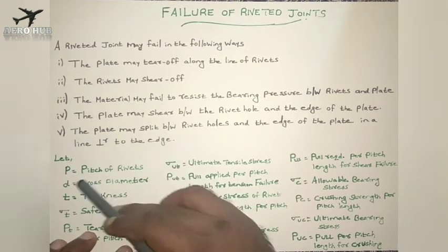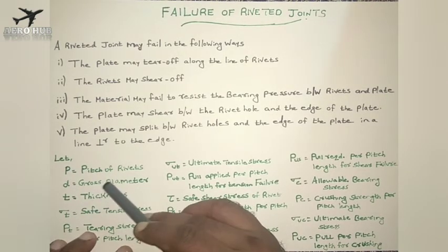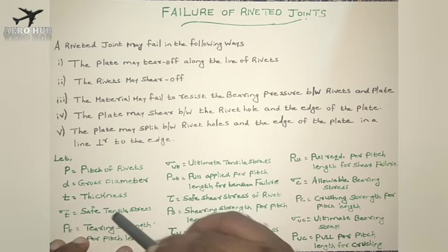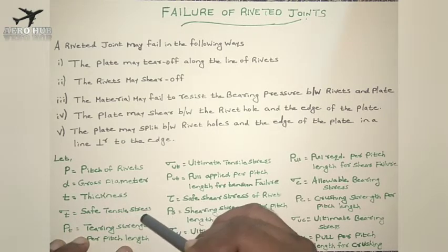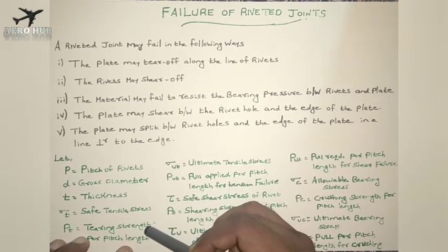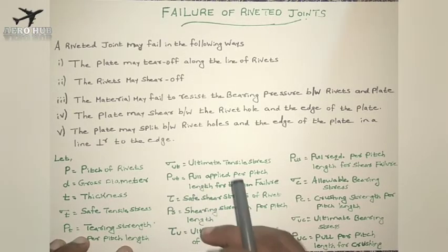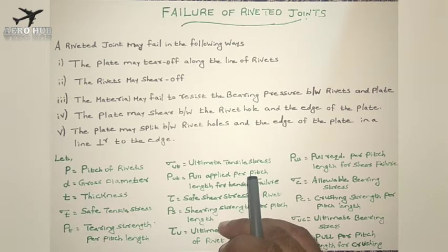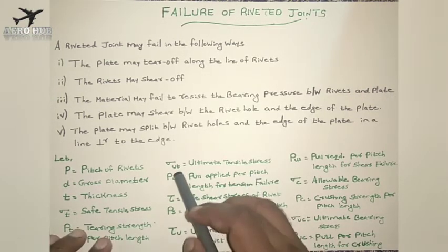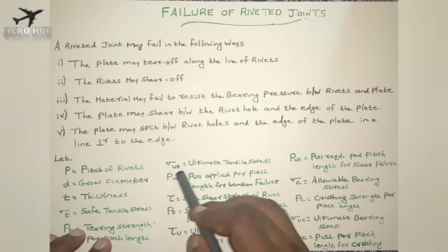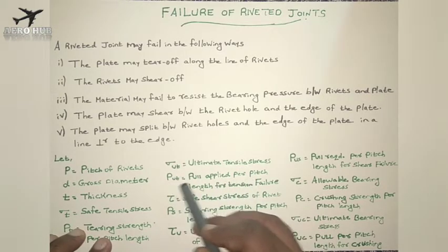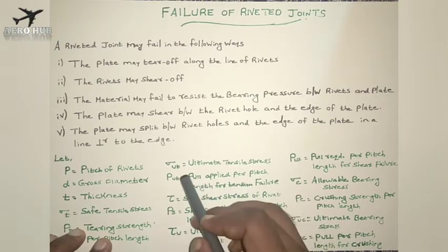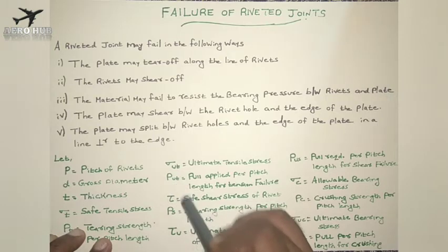Let p be the pitch of the rivet (small letter p), d is diameter, and t is the thickness of the plate. Sigma_t is the safe tensile stress of the plate. Tension failure will mainly happen to the plate. P subscript t is the tearing strength per pitch length. Sigma_ut is the ultimate tensile stress of the plate. P_ut is the pull applied per pitch length for tension failure. These are all applicable to the plate, not the rivet.